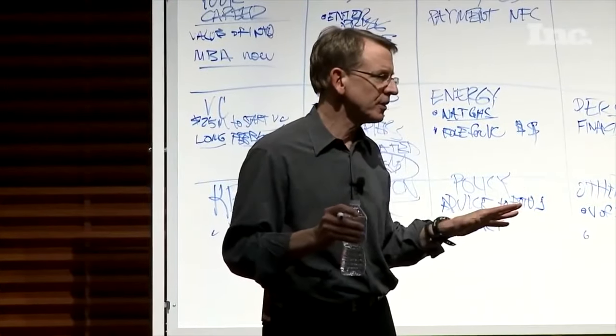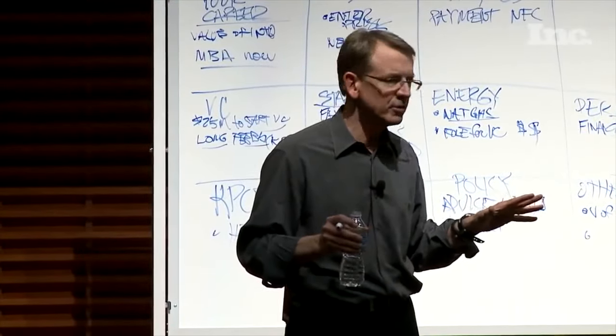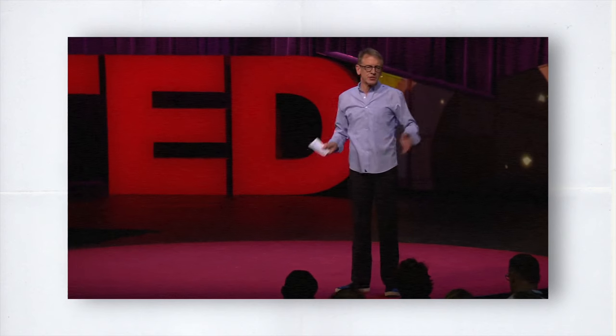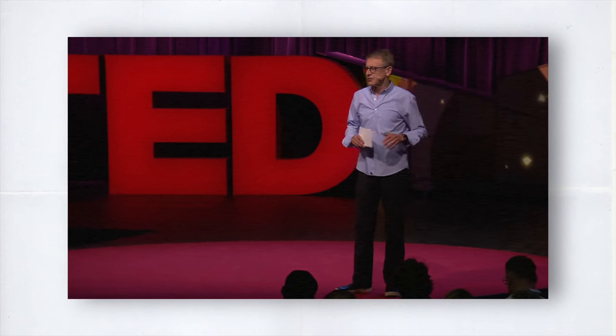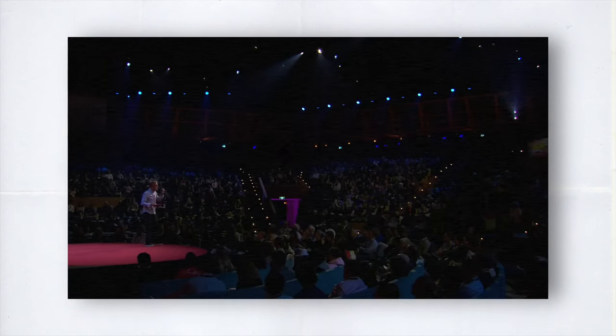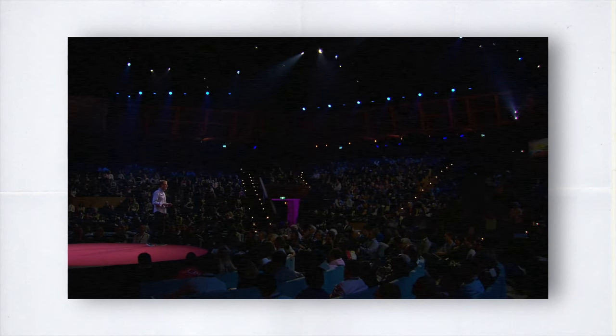John Doerr, an early investor in Google and perhaps the main reason for OKR's popularity, has described the structure of an OKR as: "I will blank, as measured by blank" — the first blank being your objective and the second blank being your key results. He's also said that many of us approach goal setting in the wrong way because we don't move towards our goals with a sense of purpose and inspiration.